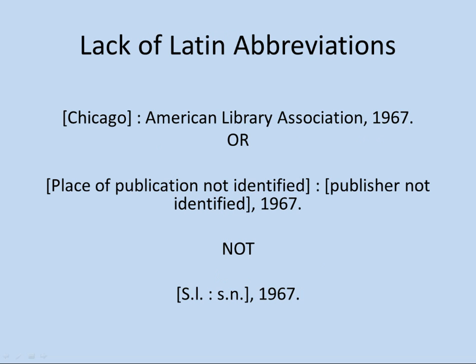Along with the lack of abbreviations, you'll see the lack of Latin abbreviations. Under AACR2, when we did not know where an item was published or what the publisher's name was, we used Latin abbreviations S.L. and S.N. — sine loco and sine nomine, 'without a place' and 'without a name.' We are no longer going to do that. Under the RDA rules, you can use the phrase 'place of publication not identified' in brackets. Library of Congress practice is to always at least take a guess at the place — supply it, and if you're not sure, put a question mark after it. If you don't know the publisher, you can use 'publisher not identified' in brackets.